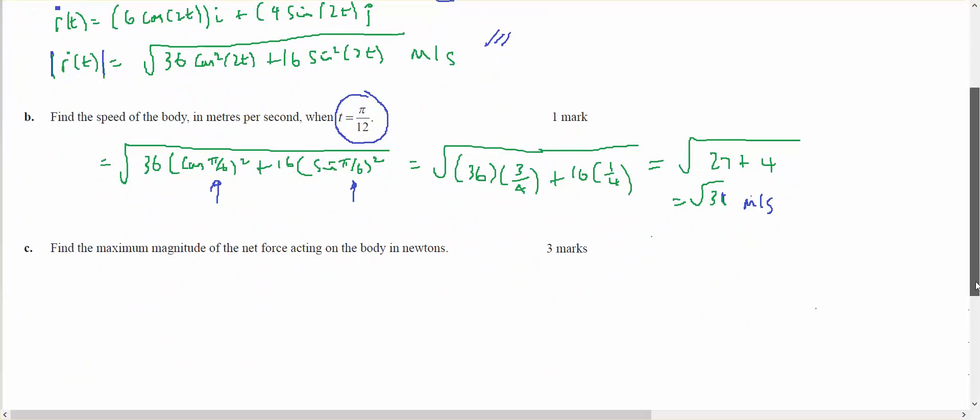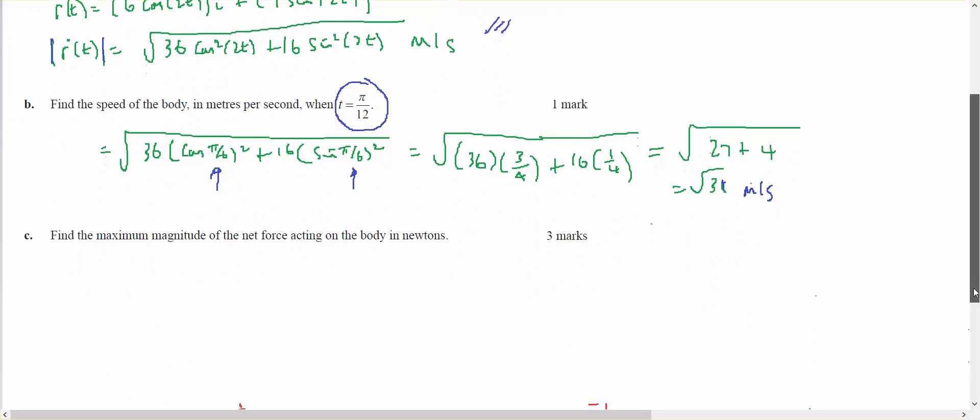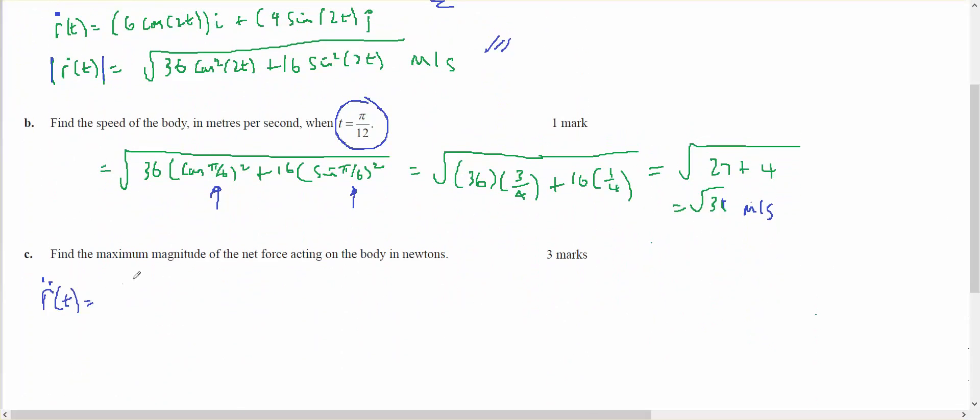Part c says find the maximum magnitude of the net force. So I need the acceleration. Acceleration, so the acceleration will be the derivative of velocity. So 2 times 6 will be negative 12 sine of 2t in the i plus 2 times 4, 8 cos of 2t in the j. And that will give me acceleration.